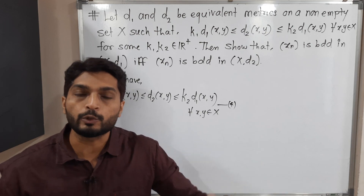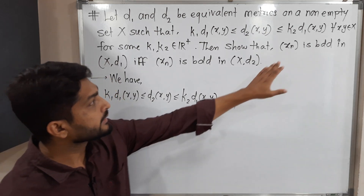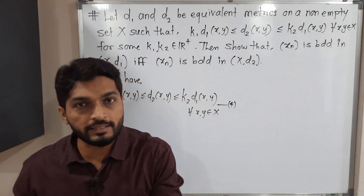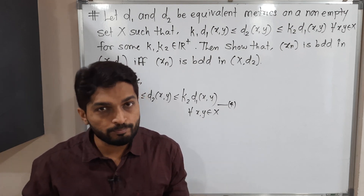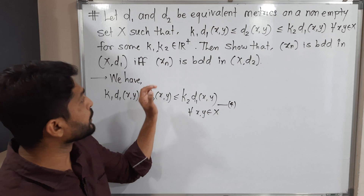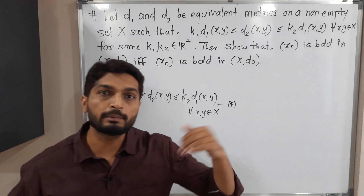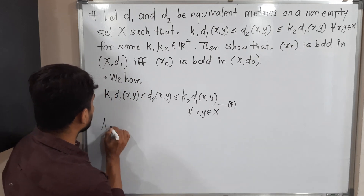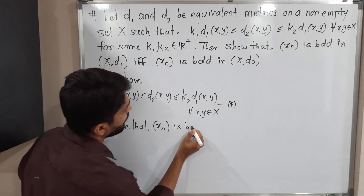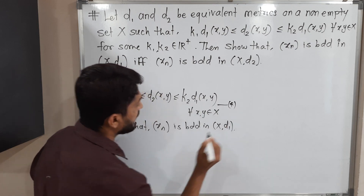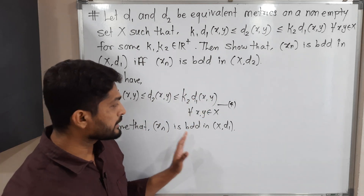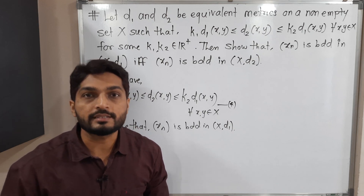k1 and k2 are positive real numbers — we will keep that in mind and use it later. Now we have to prove that the two statements are equivalent: xn is bounded in (X, d1) if and only if xn is bounded in (X, d2). When we have an if-and-only-if condition, we first assume the first part — so I will assume xn is bounded in (X, d1) and prove xn is bounded in (X, d2), then prove the converse.